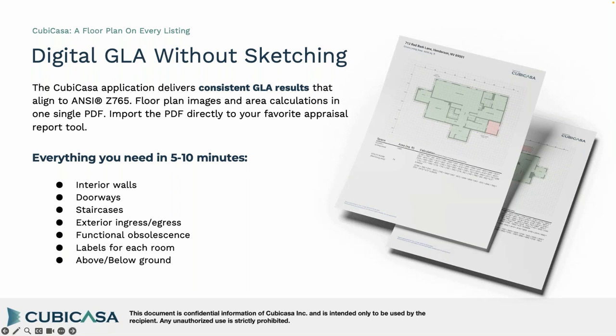The GLA report is one of the additional products on top of the basic floor plan. CubaCasa delivers consistent GLA results aligned to ANSI standards — the floor plan image and area calculations are all in one single report, making it perfect for appraisers. It includes non-livable areas, storage, non-heated areas, wall thickness for overall dimensions, exterior ingress/egress, and above/below ground spaces.